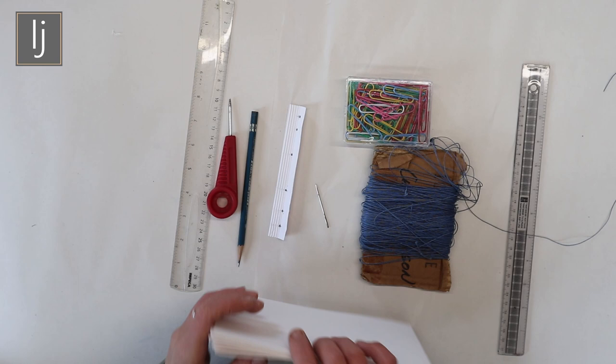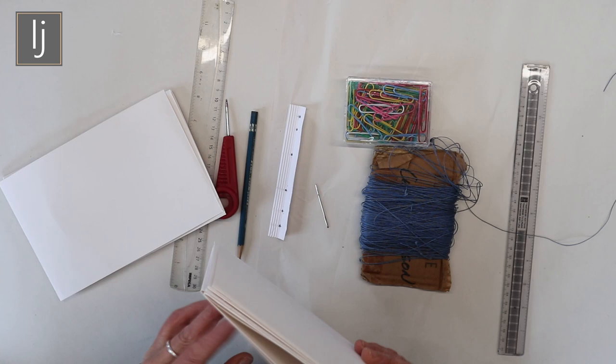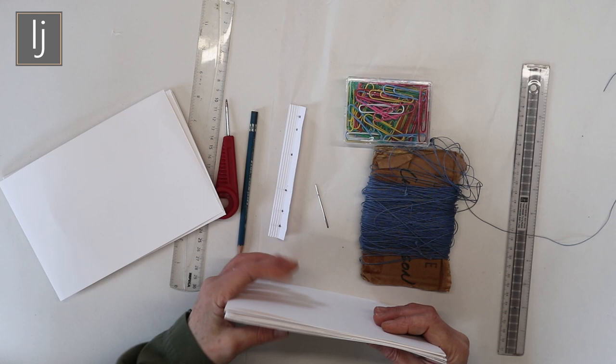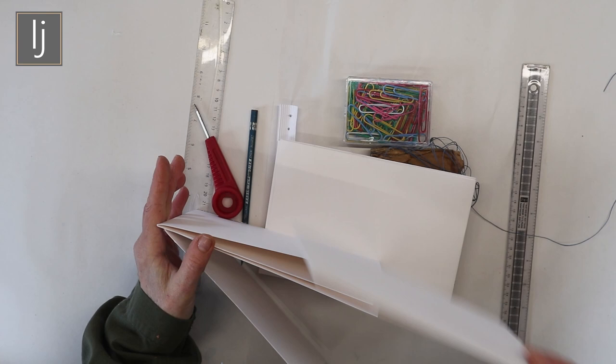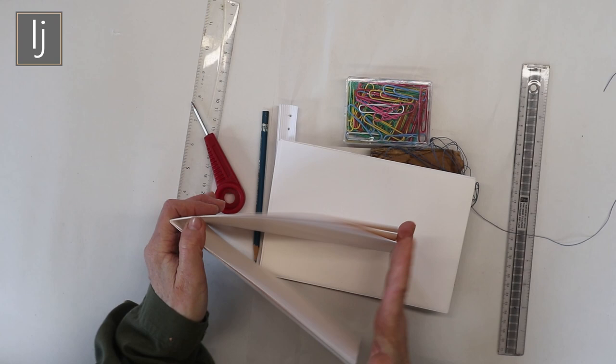I've made up some signatures which are the folded groups of paper. These are one, two, three, and each signature is three pieces. I'm not too worried about them being the precise size, they're near enough. I'll trim them up afterwards. I've got three signatures of three, so I'll just put them together so you can see what a signature is.